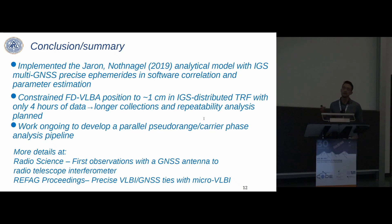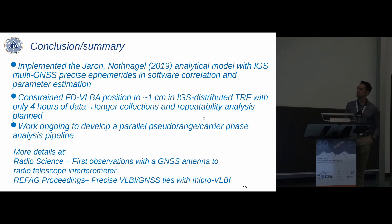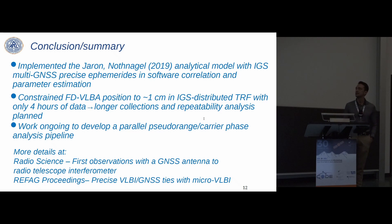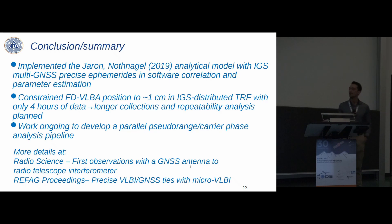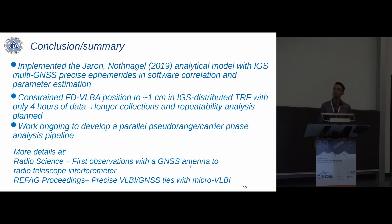In conclusion, we have implemented an analytical delay model with analytical partials at each stage of processing using precise ephemerides from IGS. We've constrained the radio telescope position to about one centimeter in the IGS-distributed TRF with only four hours of data, and expect to do much better with longer collections and repeatability analysis. Work is also ongoing to develop the parallel pseudorange and carrier phase analysis pipeline. A paper published last year details the hardware and software processing, and a former proceedings paper covers our geodetic observing strategy.